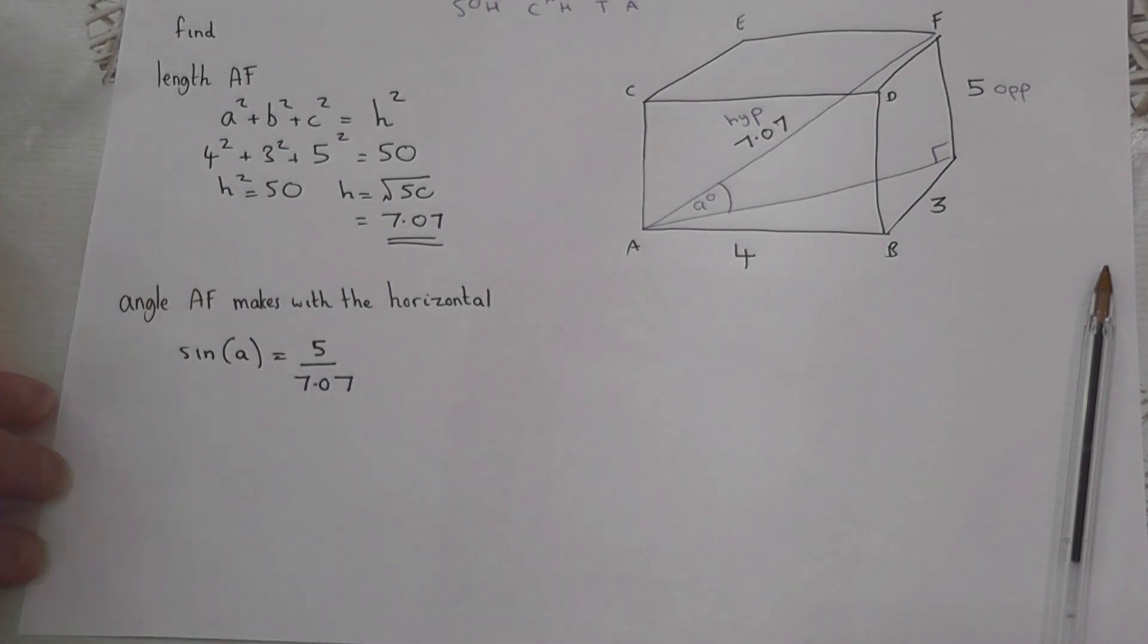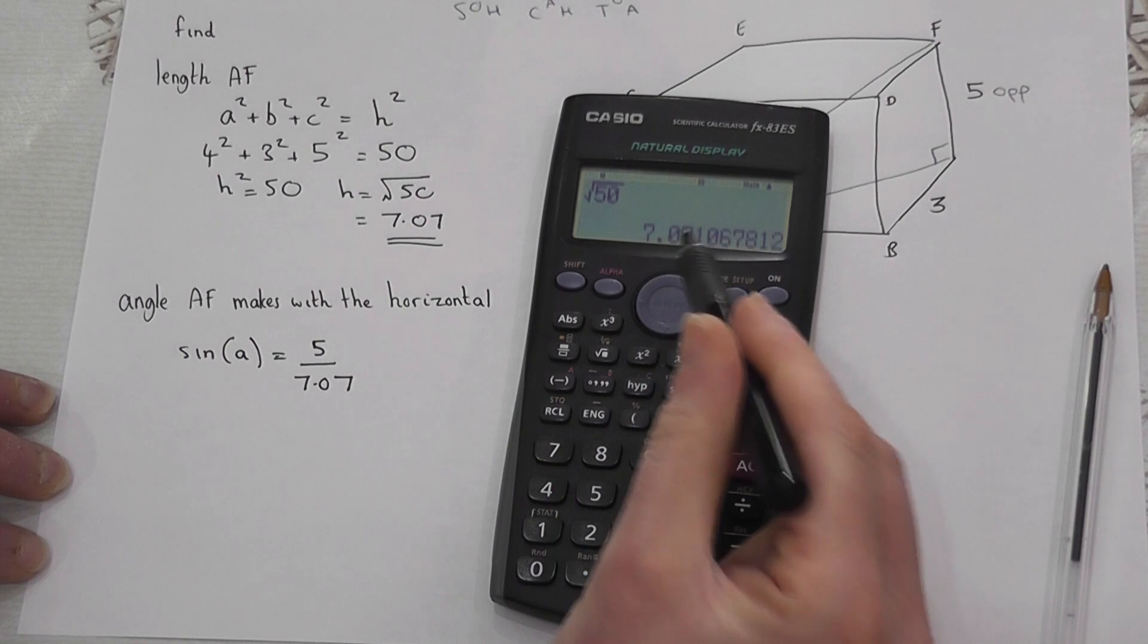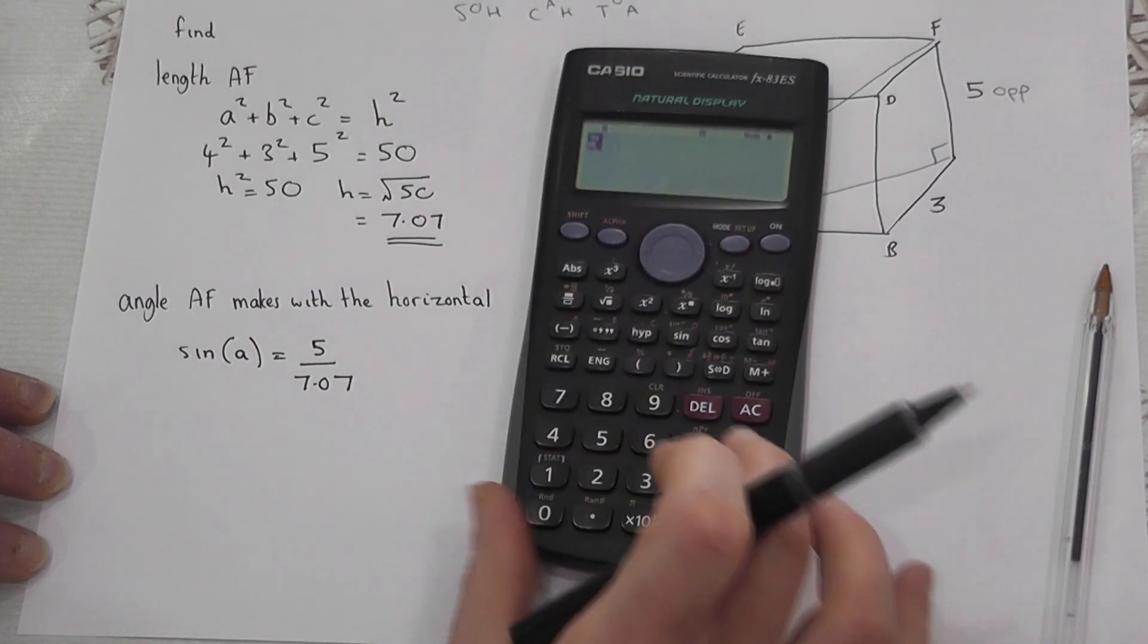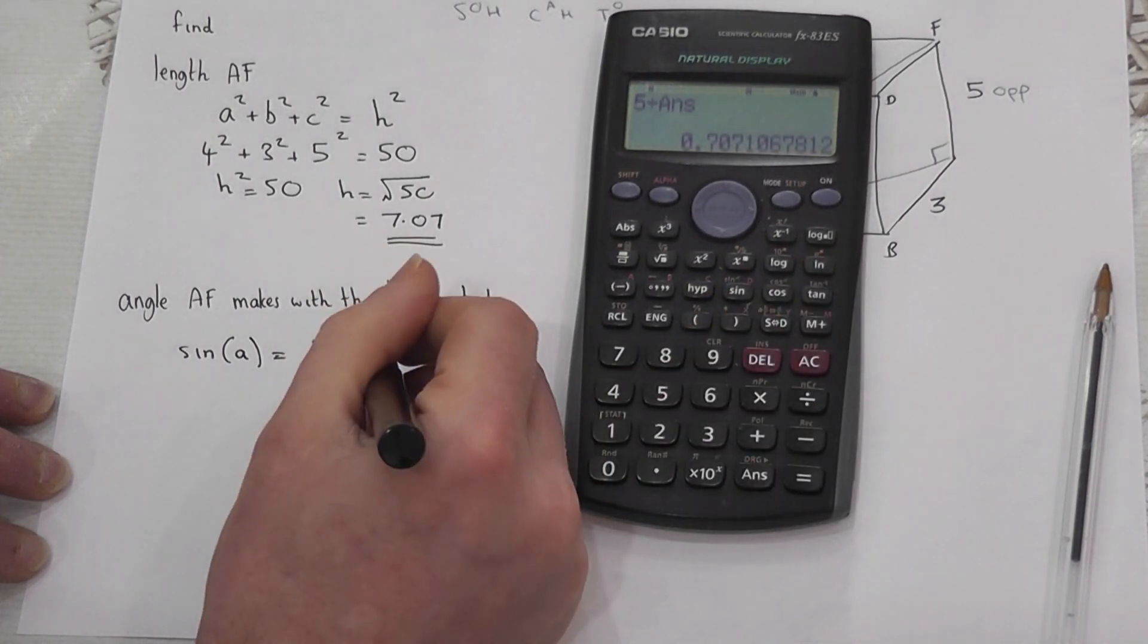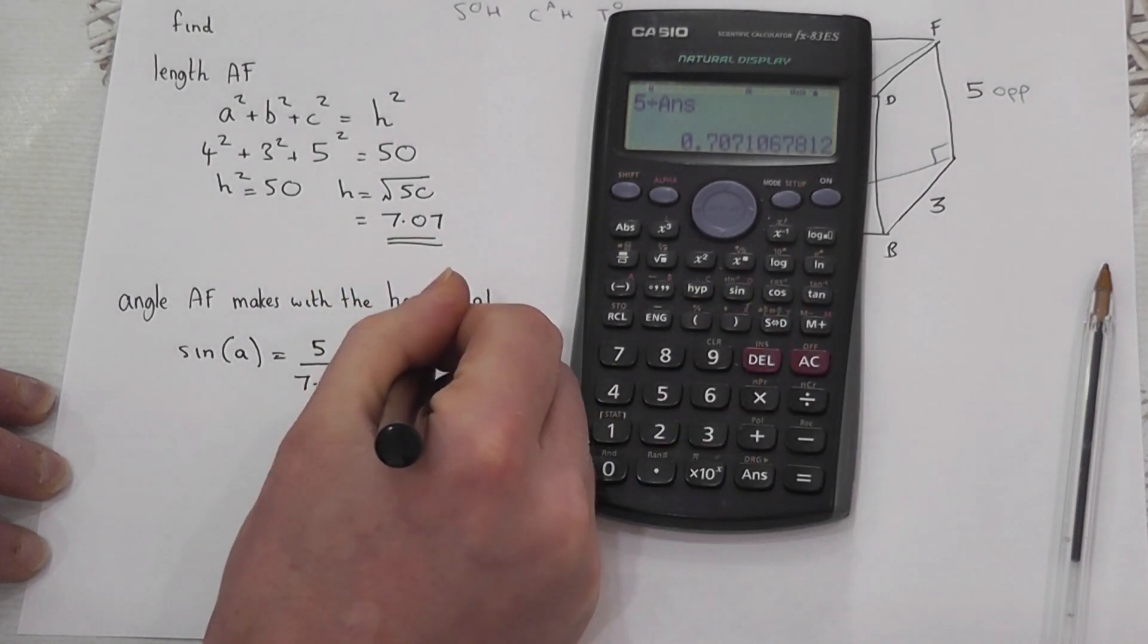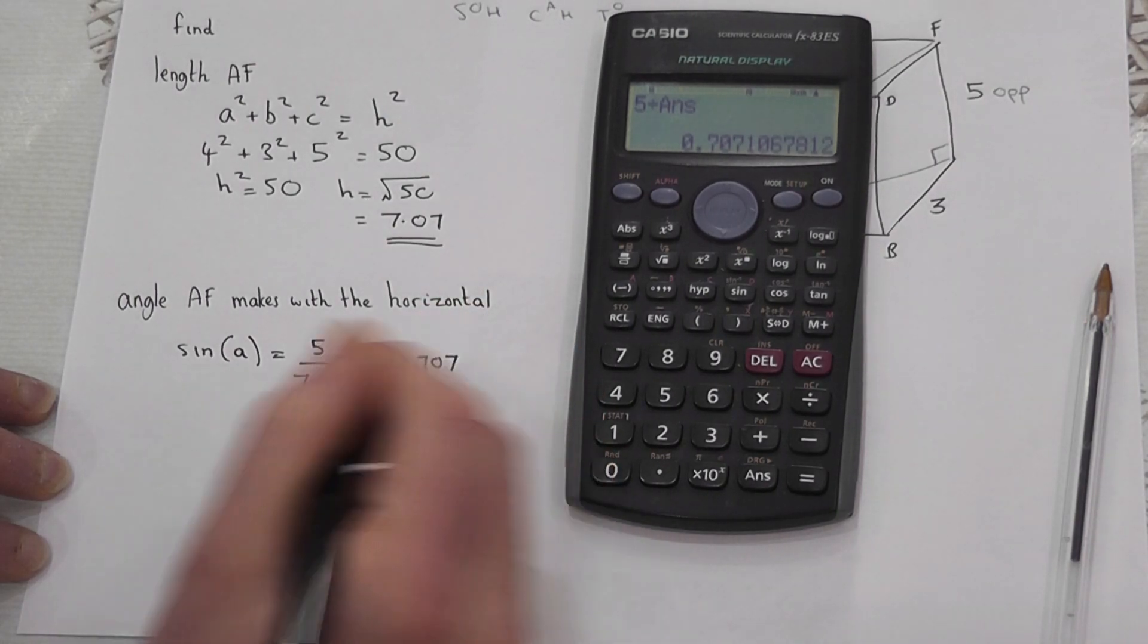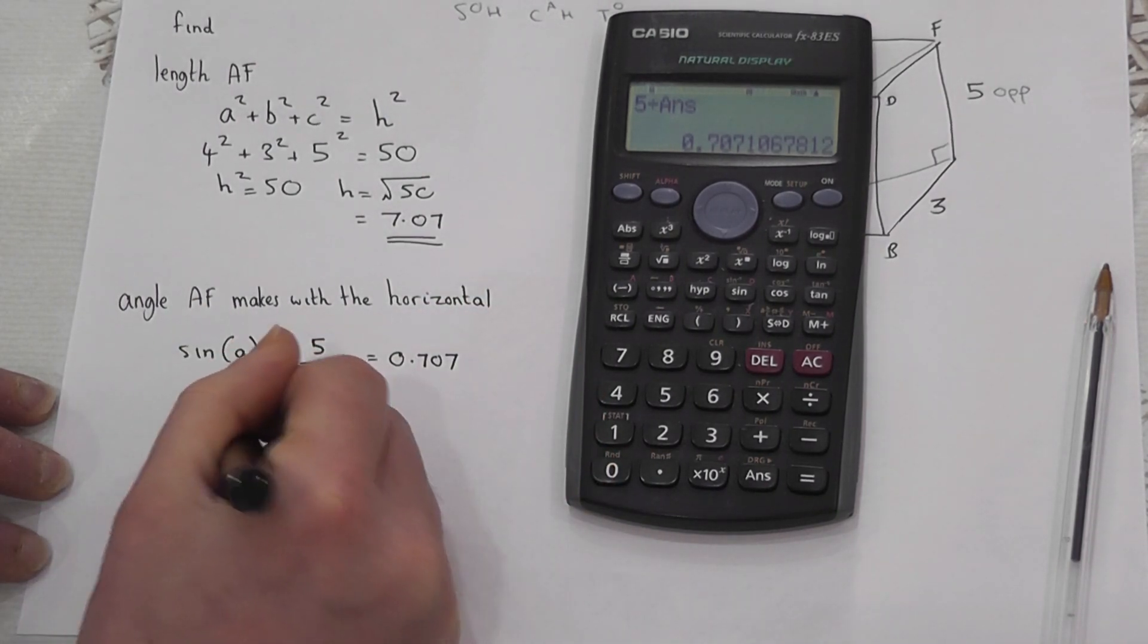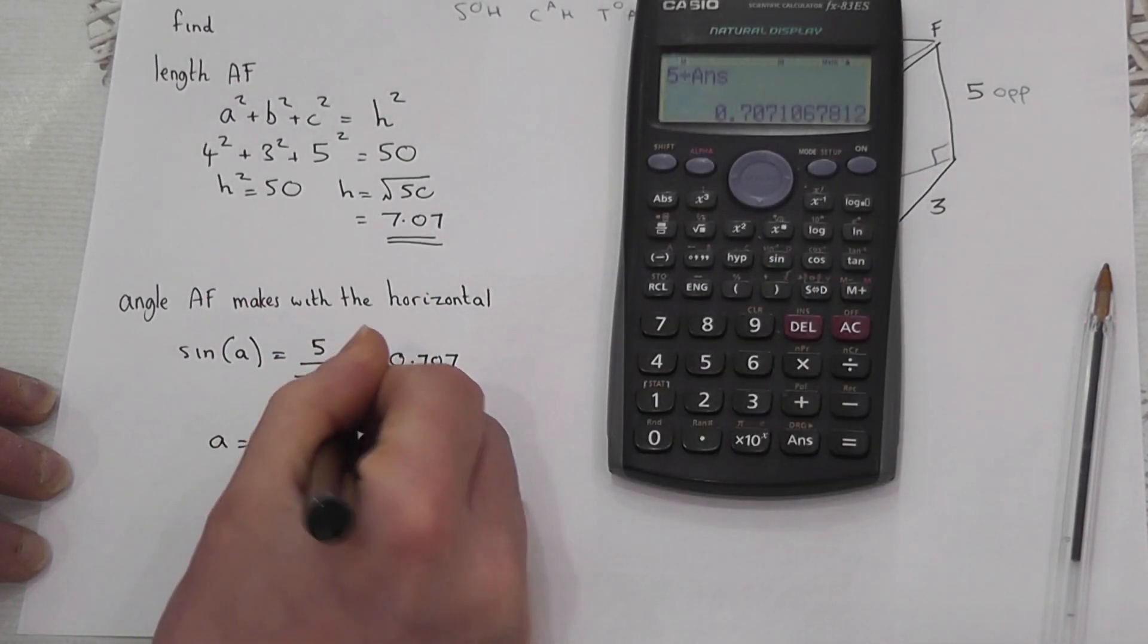To find out the angle, I've got the 7.07 stored in my calculator. I do 5 divided by the answer, which gives me 0.707. Then I do the inverse sine of this decimal.